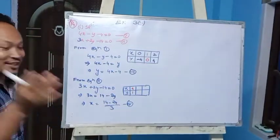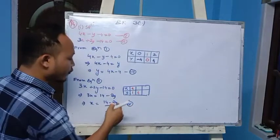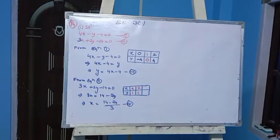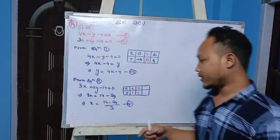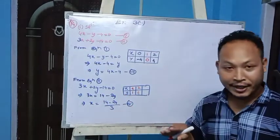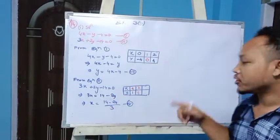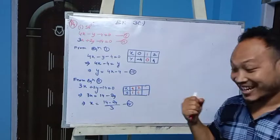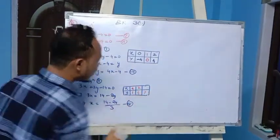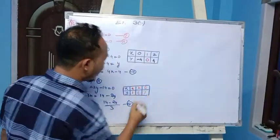Continuing: if y equals 5, then 2 times 5 is 10, and 14 minus 10 is 4. 4 divided by 3 is not exact. If y equals 6: 2 times 6 is 12, and 14 minus 12 is 2. 2 divided by 3 is not exact. If y equals 7: 2 times 7 is 14, and 14 minus 14 is 0. 0 divided by 3 is 0, so x equals 0. So y equals 7 gives x equals 0. This completes the table for equation 4.